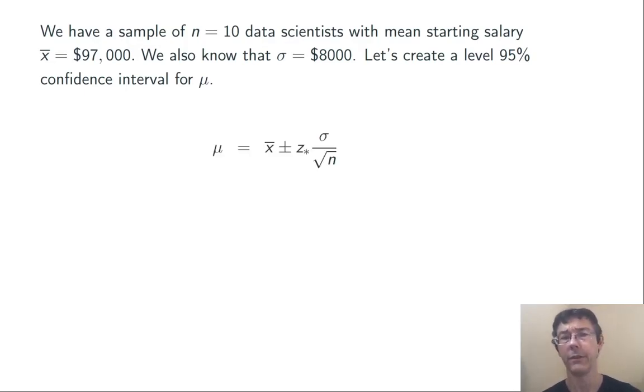Here's the general form of our confidence interval. All we have to do is plug in. We take out x-bar and put in $97,000. The z-score corresponding to that level of confidence, C equals 0.95, is going to be z-star equals 1.960, and then sigma over root n is going to be $8,000 over the square root of 10.